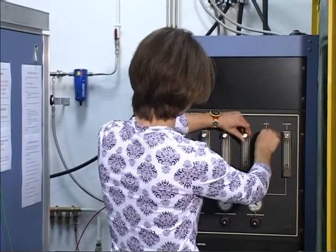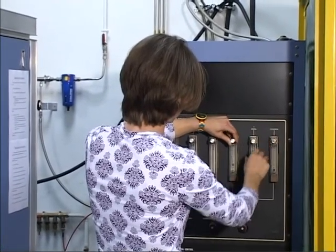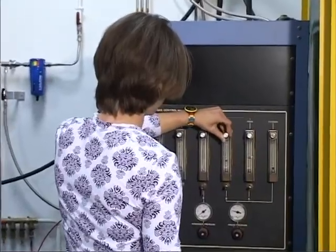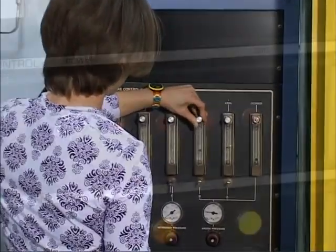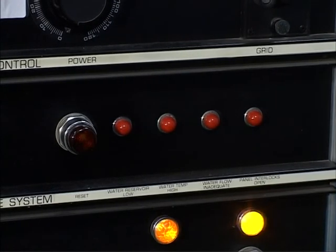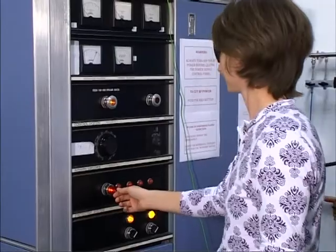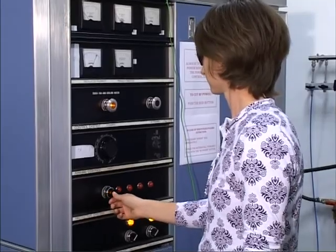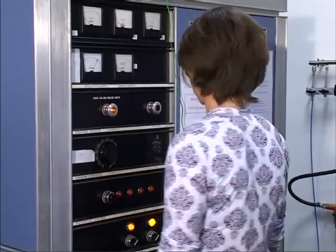We use argon for start-up because it is easily ionizable. When the red light comes on, warm-up is complete, and we do a final check of the safety and control panel, and then turn on the high voltage system.